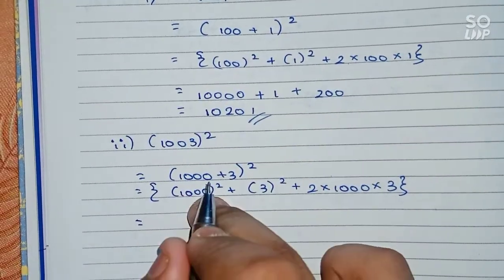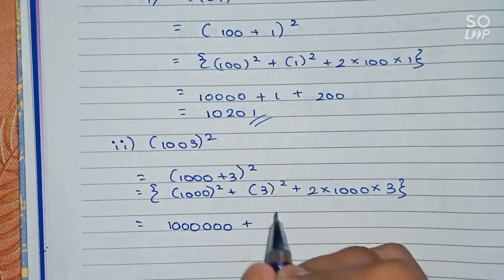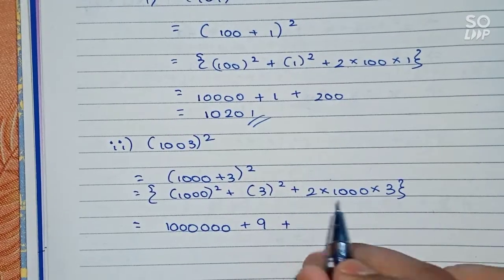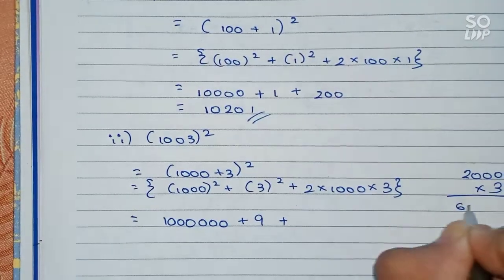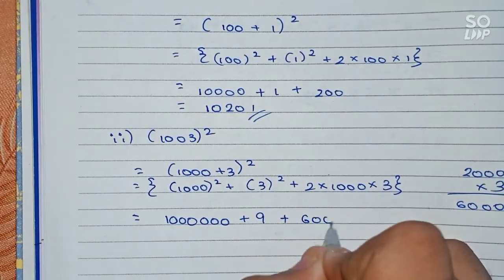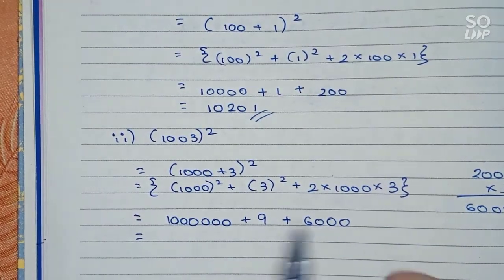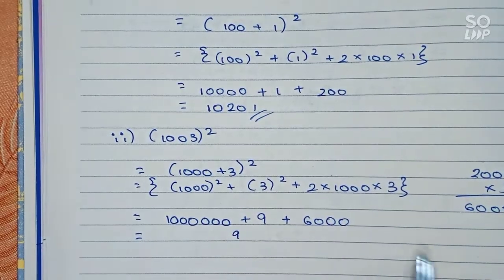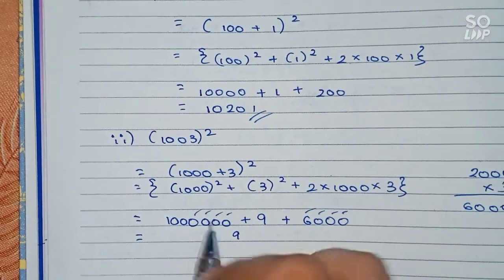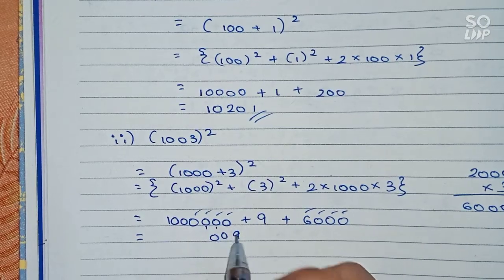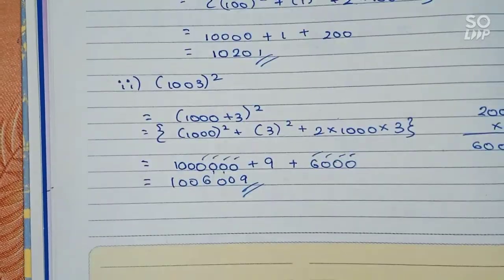Now, 1000² means the number of zeros get doubled, giving us 1,000,000. Plus 3² = 9. Plus 2 × 1000 × 3 = 6000. Now we place these together: 9 goes at the end, 6 goes in the thousands place, giving us 1,006,009 as the final answer for question two.